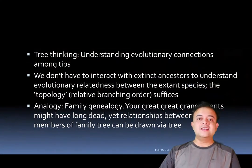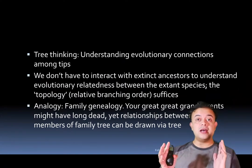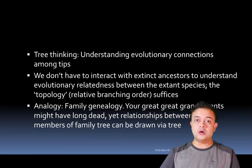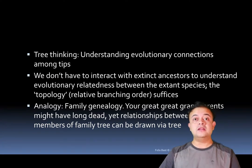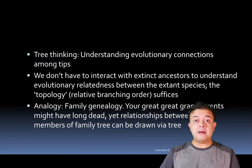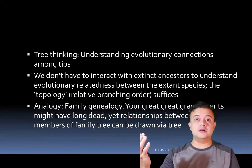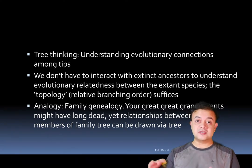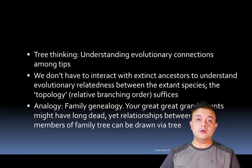Tree thinking is all about understanding the evolutionary connections among the tips — the topology, which is the branching order. Tips are usually species, so how these species are related is what tree thinking is about. We really don't have to interact with the ancestors to find the relationship between extant species — extant meaning still alive, as opposed to extinct, meaning already dead.